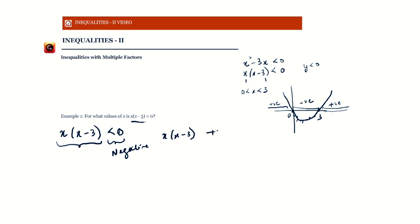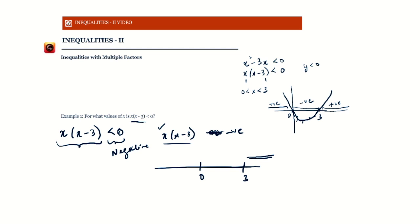So when will a product of two factors be negative? When exactly one of them is negative. When will it be positive? When either both are positive or both are negative. On the number line, we mark zero and three. When x is greater than three, both x and x minus 3 are positive, so the product x(x minus 3) is positive in that region.